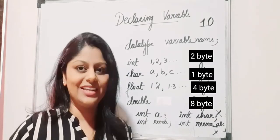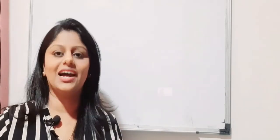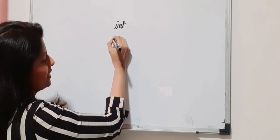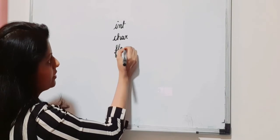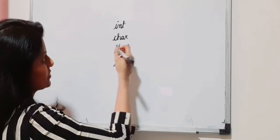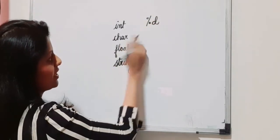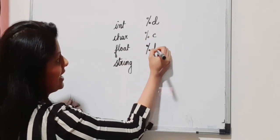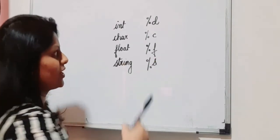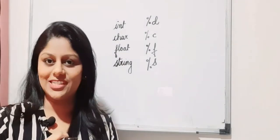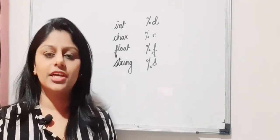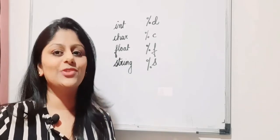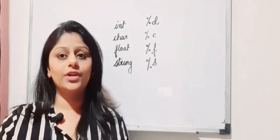The computer uses special format specifiers to recognize data types. For int, use %d; for char, use %c; for float, use %f; and for string, use %s. The double data type also uses %f. These notations are used in scanf and printf statements — you don't write 'int' or 'char' inside those functions, you use these format specifiers.